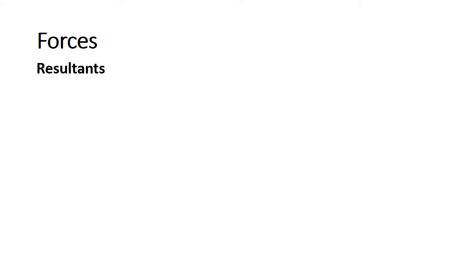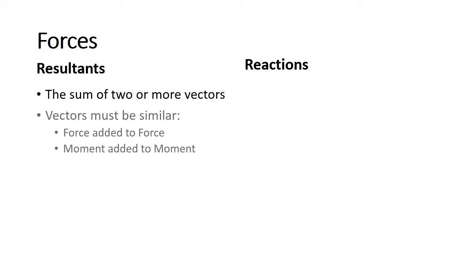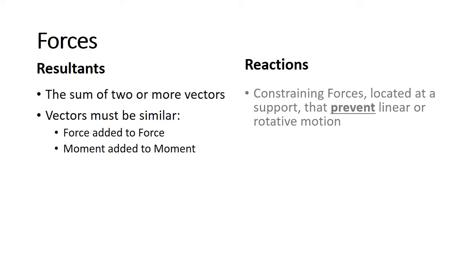The first thing we're going to examine are two categories of forces that are often confused with one another. The first is resultants and the second are reactions. Resultants are the sum of two or more vectors, and the vectors must be similar to one another when we add them. So force vectors must be added to force vectors, moment vectors added to moment vectors. Sometimes we call our moment vectors couples, or couple moments, or moment couples — they all mean the same thing. The second category of forces are reactions, and these are constraining forces located at a support that prevent either a linear motion or rotation.